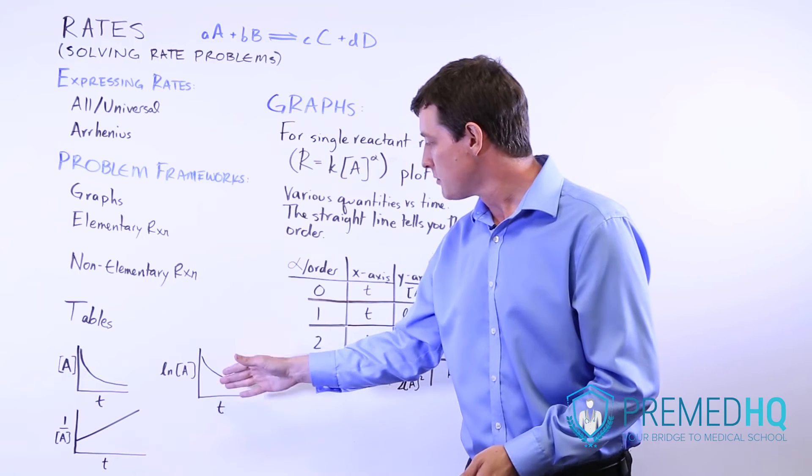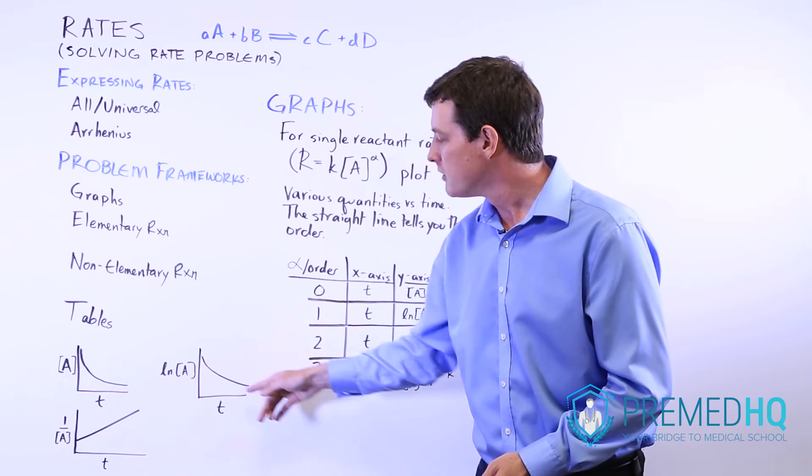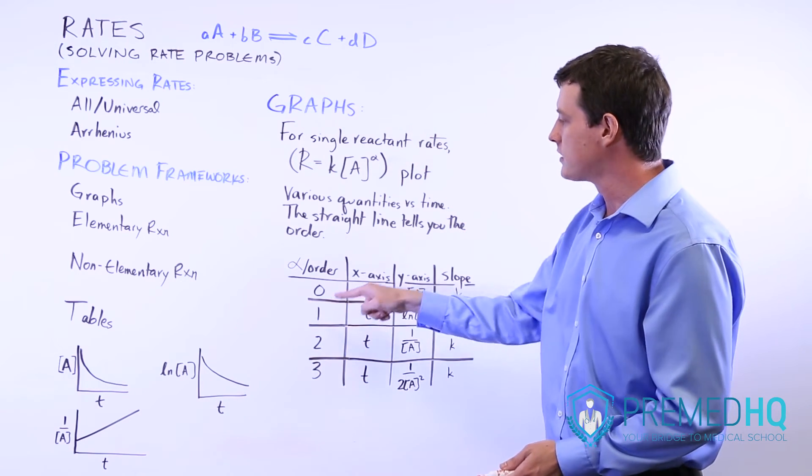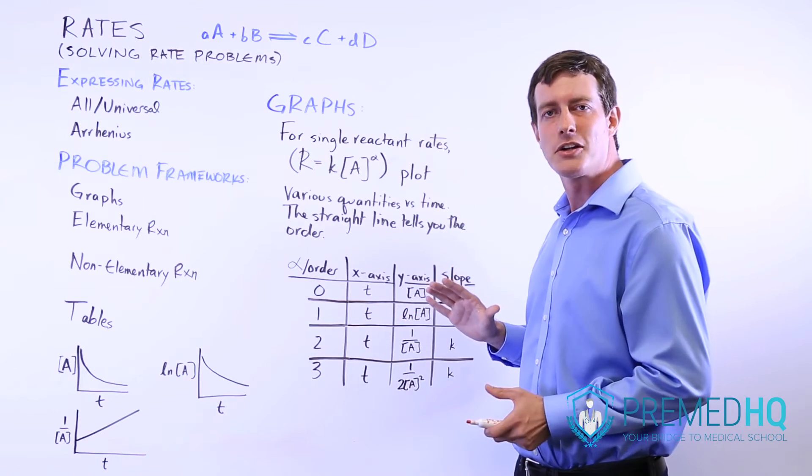LN of A is a similar story. It's a slightly curved line. And that tells you that it's not first order, because that doesn't yield a straight line either.